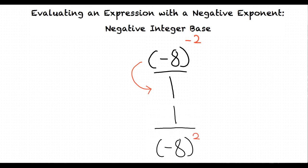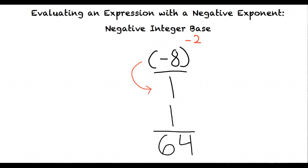Now we need to simplify our expression. We do this by taking negative 8 to the power of 2, which results in 1 over 64. Notice that the sign only changed because we took negative 8 to the power of 2. We did not change the sign when we moved our base and exponent to the denominator.